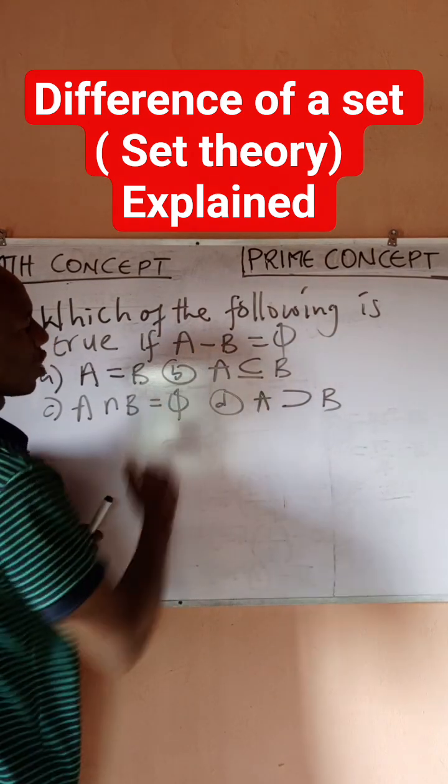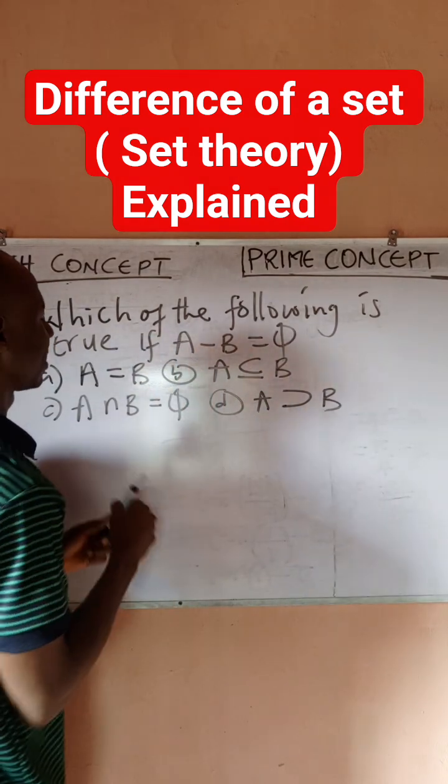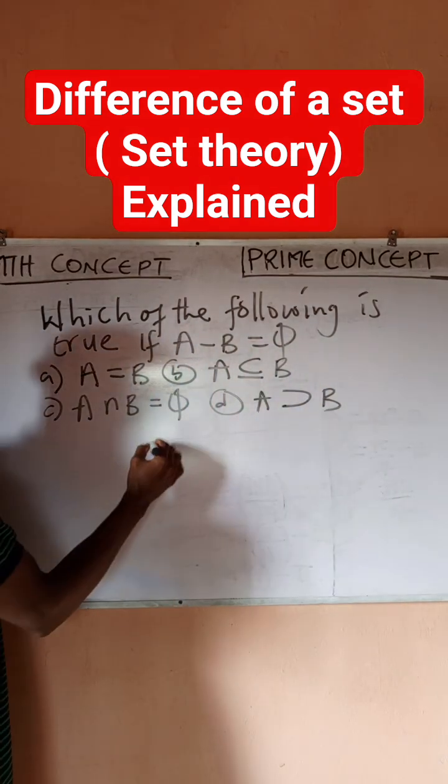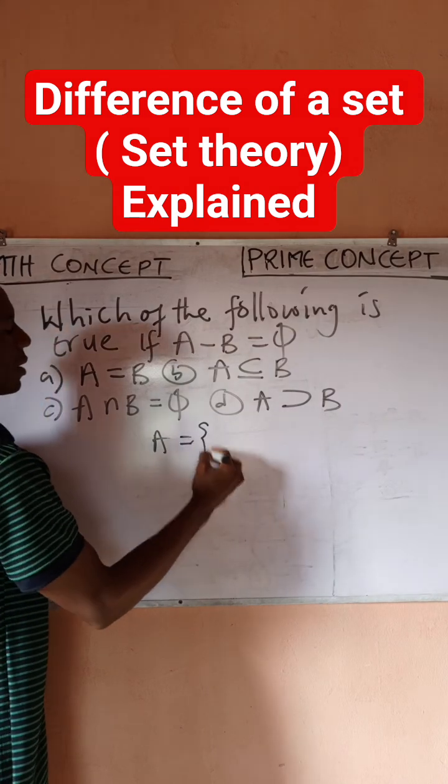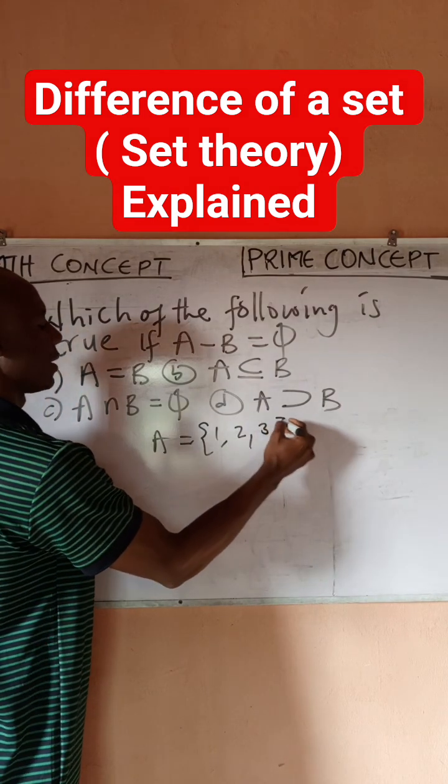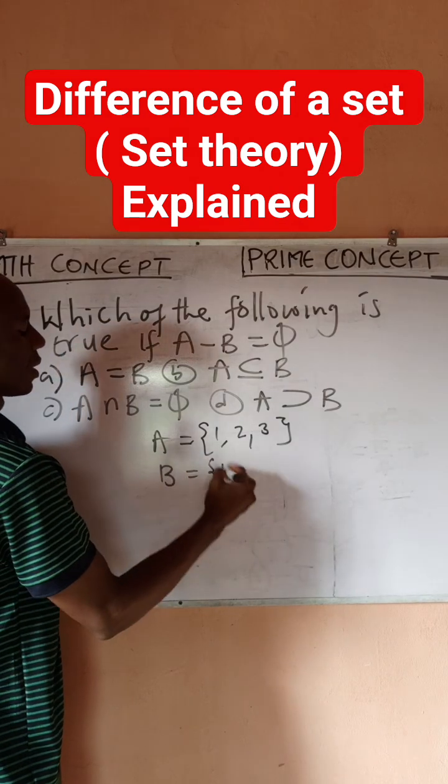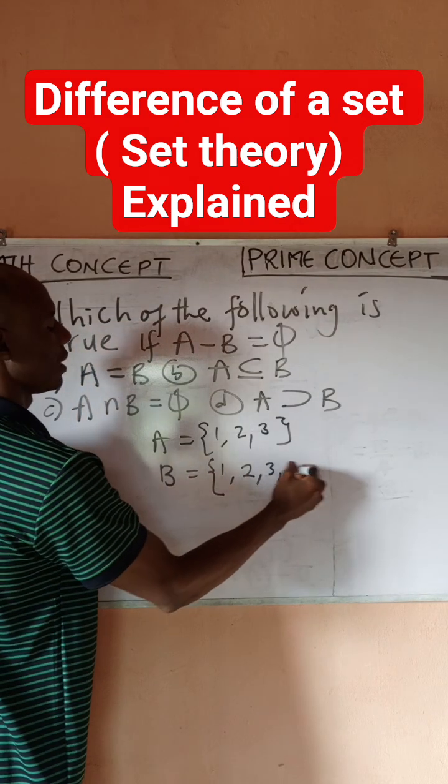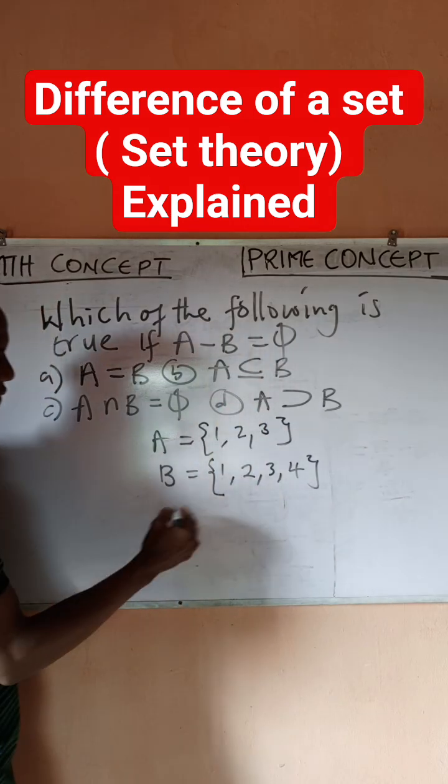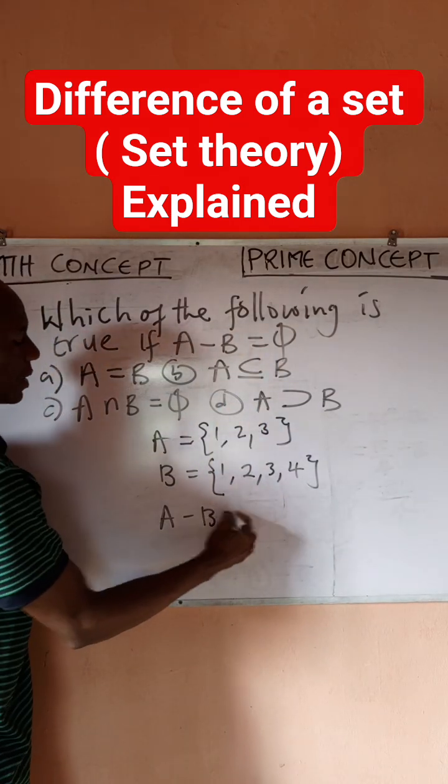For this condition to work, A difference B is an empty set. Now let's quickly take an example. Say A is {1, 2, 3}, then say B is {1, 2, 3, 4}. So if I do A difference B...